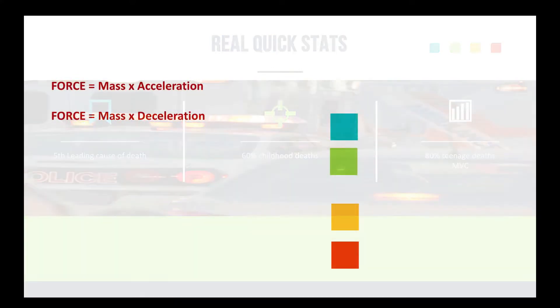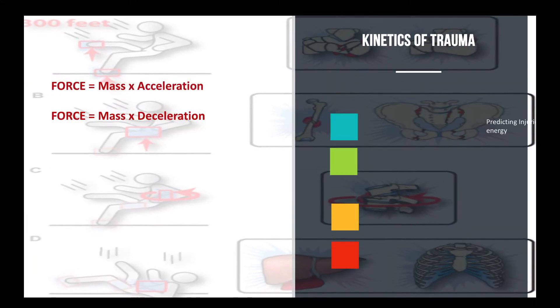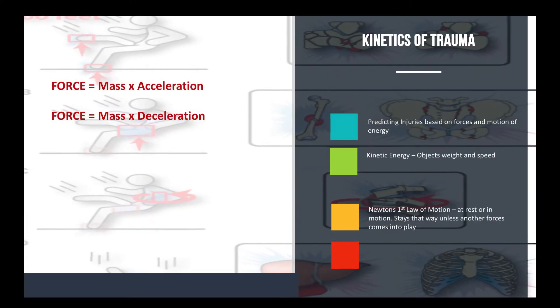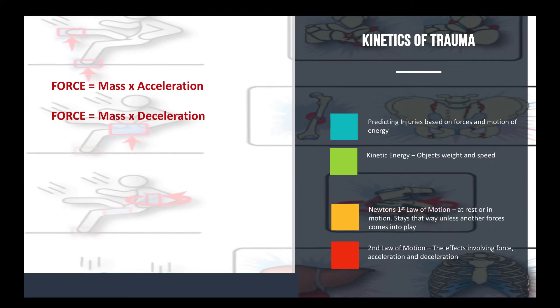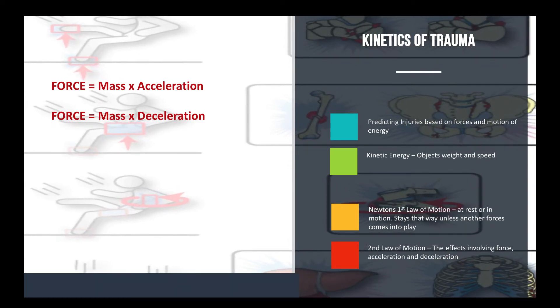I'm not going to get into trauma centers and stuff like that. I want to talk about the kinetics of trauma, and this is that prediction when we try to predict injuries based on forces, motions of energy, and what we can predict as far as the injury patterns that result from that. And perform an overall assessment of the scene and the kinetics of the trauma and the situation that we're viewing.